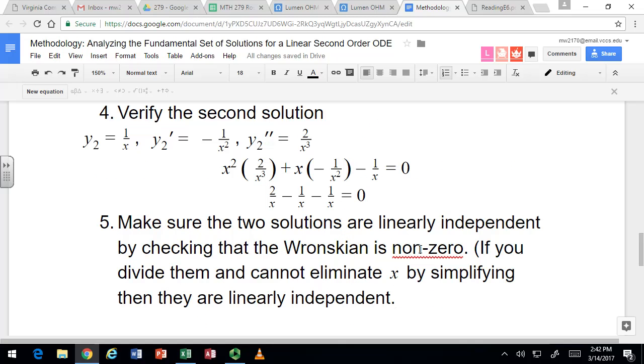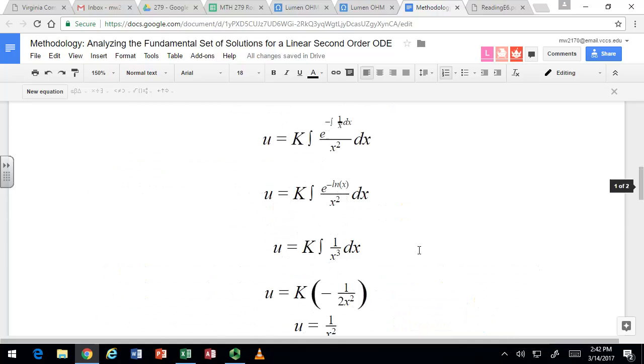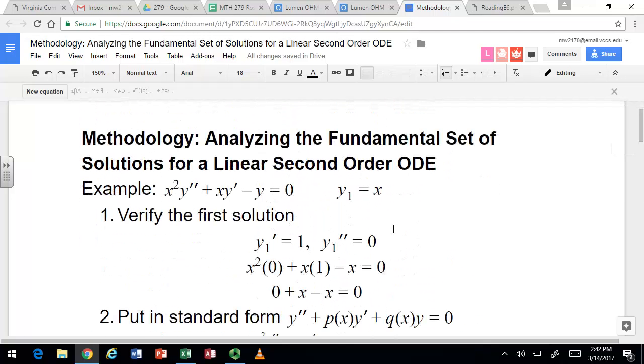So it's possible to do step four, that is verify the solution, see that it is in fact the solution, but it could still not be linearly independent. It might not be the other solution we're looking for, it might just be a multiple of the one we found in the first place. So if it's a multiple, that's not really providing us anything new.